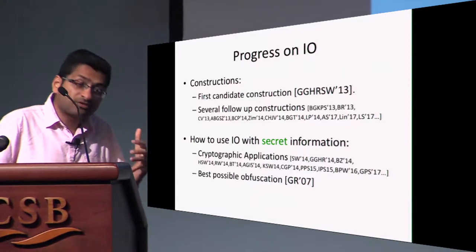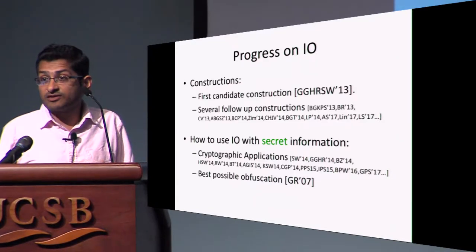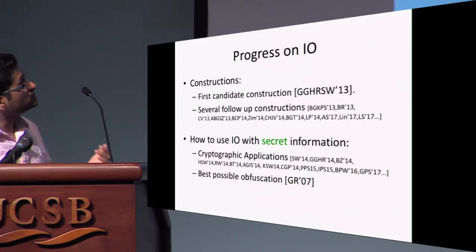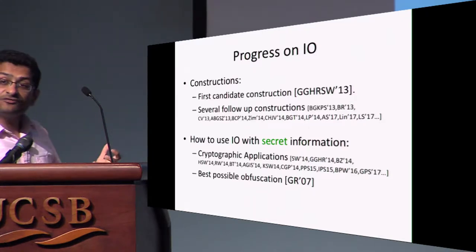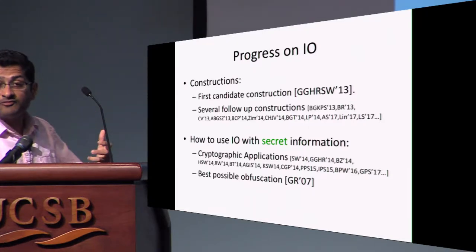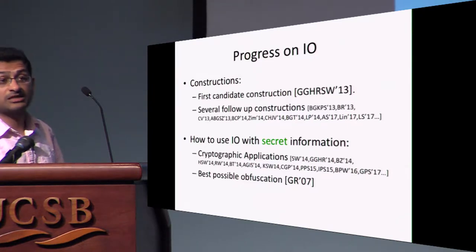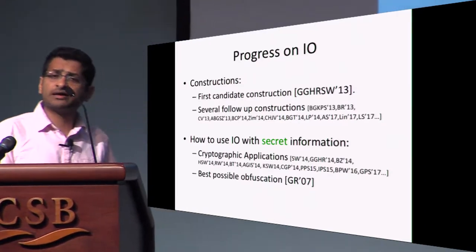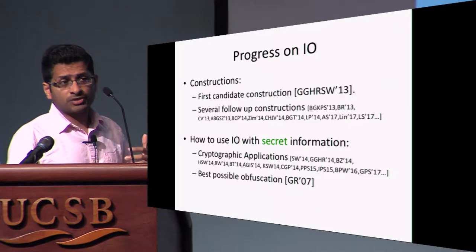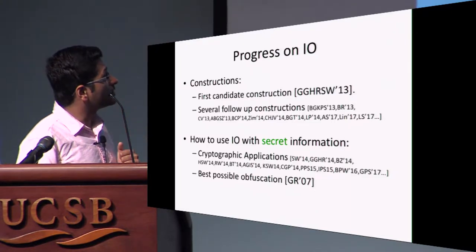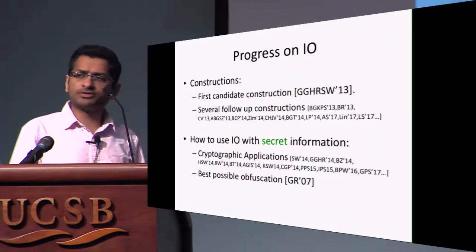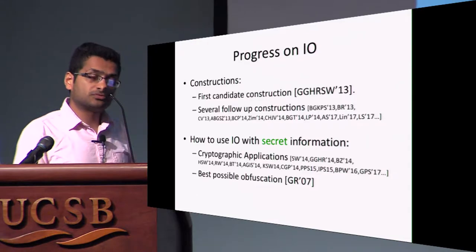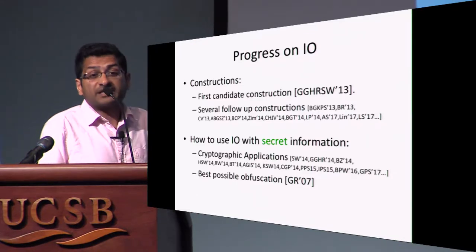It might seem like, if you're trying to obfuscate two circuits that already implement the same functionality, what are you really trying to hide? It might seem like a weak notion, but there's been a long line of work suggesting that this notion is indeed very powerful and can hide cryptographic secrets inside programs, and a number of applications have been demonstrated. The strongest formal justification comes from the work of Goldwasser and Rothblum, which says that indistinguishability obfuscation is in fact the best possible obfuscation — whatever this notion hides is the best you could hope to hide.